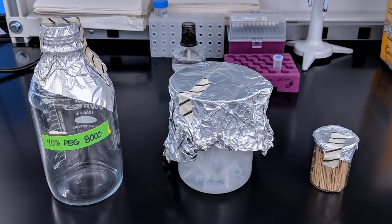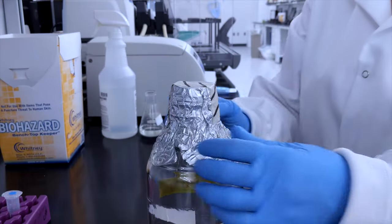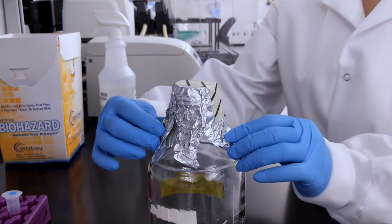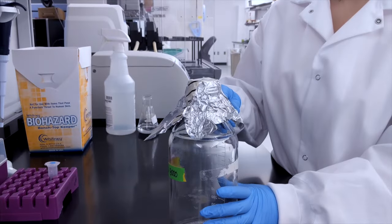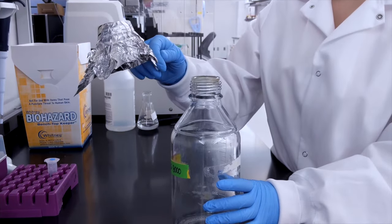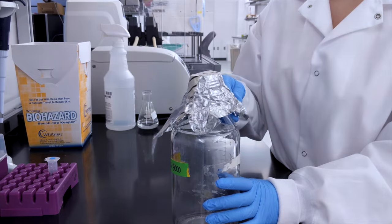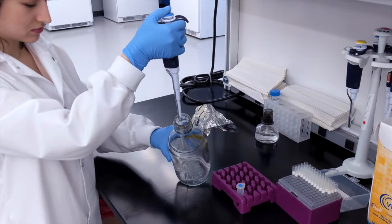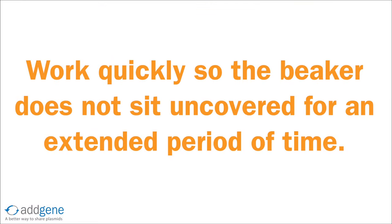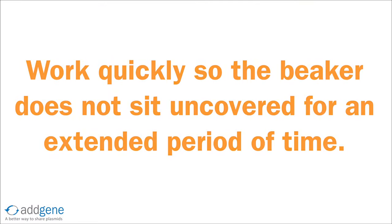Foil is often used as a cover for bottles and beakers. Before beginning your work, gently loosen the edges of the foil so that it is easier to remove. When ready, gently lift the foil with one hand and keep it upright to prevent contamination of the sterile side. While working, keep the foil in your hand rather than putting it down on the lab bench. Work quickly so that the beaker does not sit uncovered for an extended period of time.